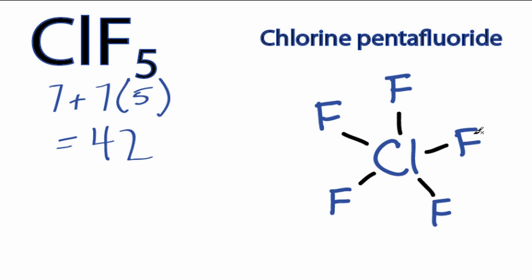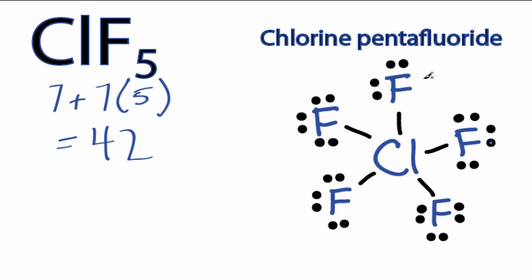Let's put electrons around the outside atoms, the fluorines. We have 10, 12, 14, and 40. We have 2 left over. What we'll do with those two is place them right here on the central chlorine, just like that.